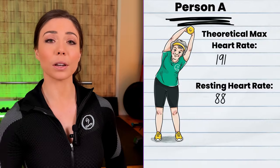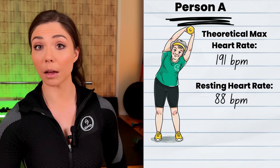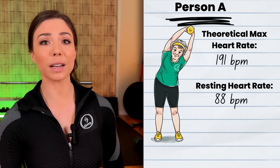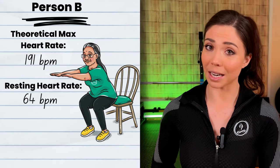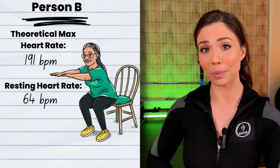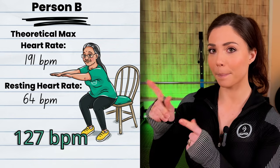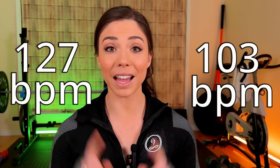As we go through this video, I'm going to use two examples: one for a physically fit person and one for someone with a higher resting heart rate. Person A will be less physically fit and person B will be physically fit. Person A has a resting heart rate of 88 and a theoretical maximum heart rate of 191 — so 191 minus 88. Person B has a resting heart rate of 64 and the same theoretical maximum heart rate of 191 — so 191 minus 64. Now we've got the heart rate reserve numbers for both person A and person B.